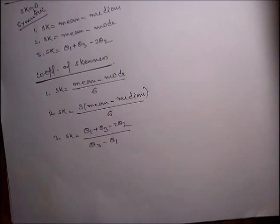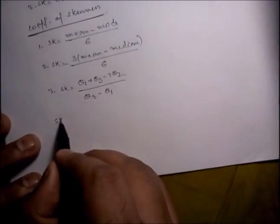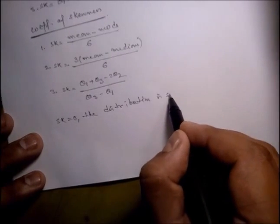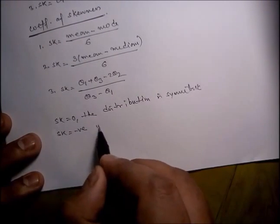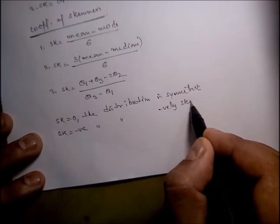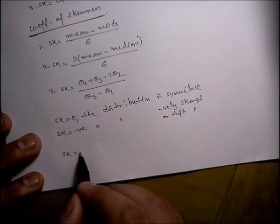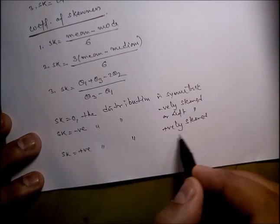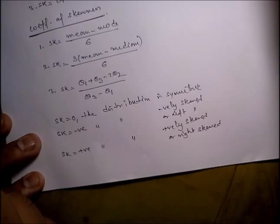In this way we can calculate the coefficient of skewness, SK. If SK equals 0, the distribution is symmetric. If SK is negative, the distribution is negatively skewed, also called left-skewed. If SK is positive, the distribution is positively skewed, also called right-skewed.